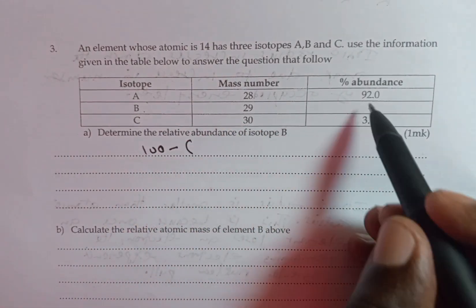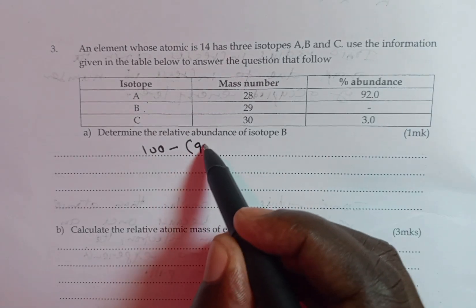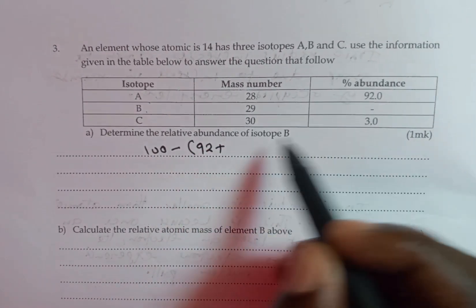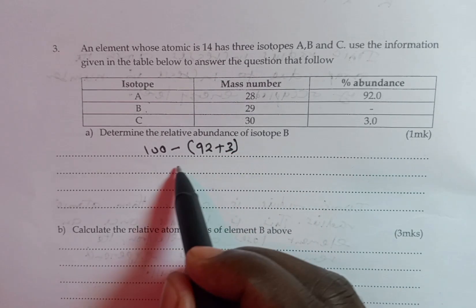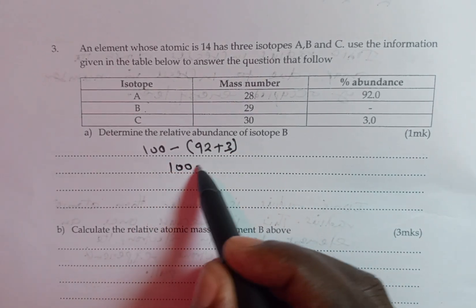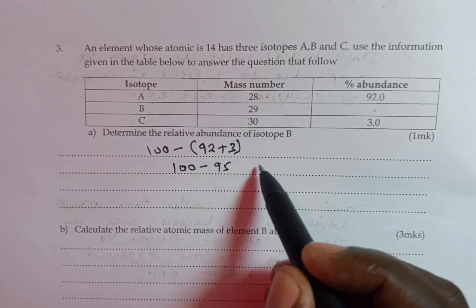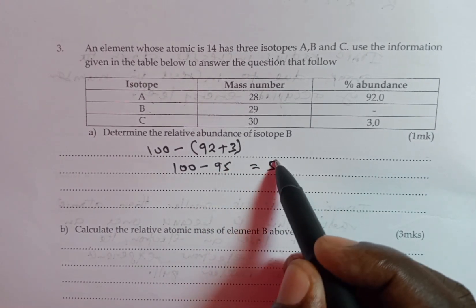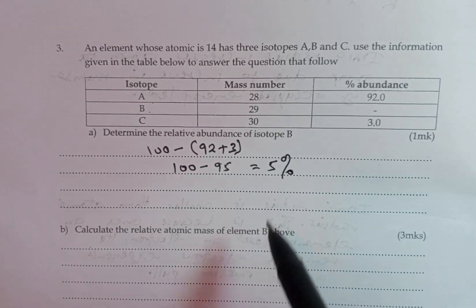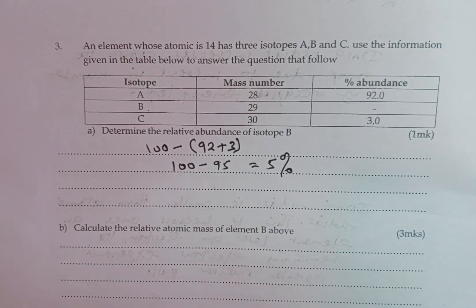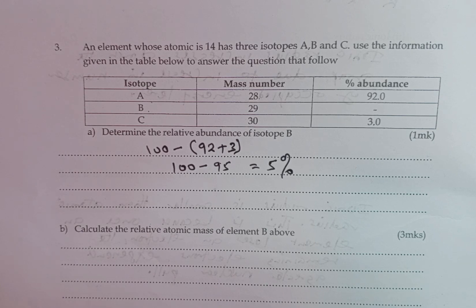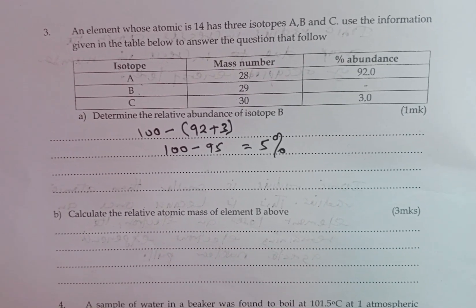Then, we subtract the sum of the two percentage abundances of 92 plus that one of C, which is 3. And this one is going to be 100 minus 95, giving us the relative abundance of 5% as the answer to part A of this particular question. We move to part B.